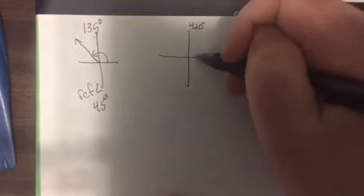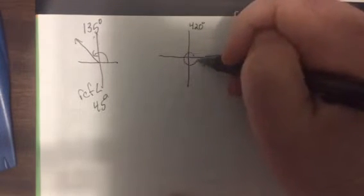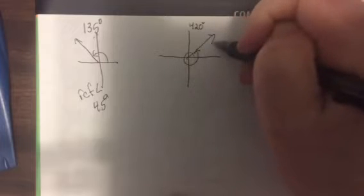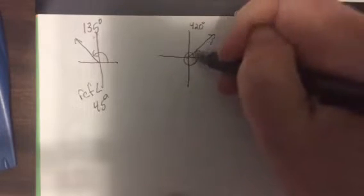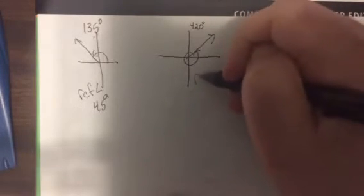This one would be, well let's see, 360 and then up here, 60 more. So how far is it between here and here? Well, 60 degrees.